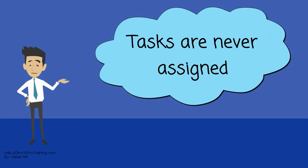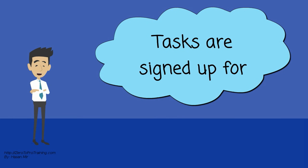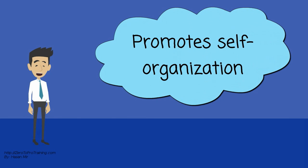Tasks on the Sprint Backlog are never assigned. Rather, tasks are signed up for by the team members as needed, according to the said priority and the development team member skills. This promotes self-organization of the development team and developer buy-in.